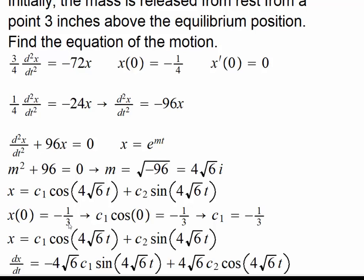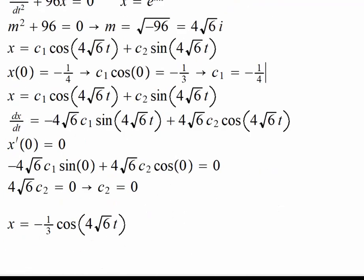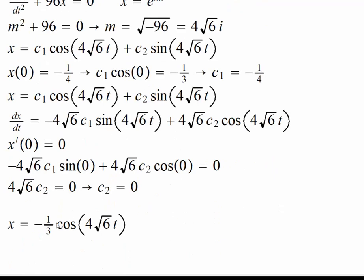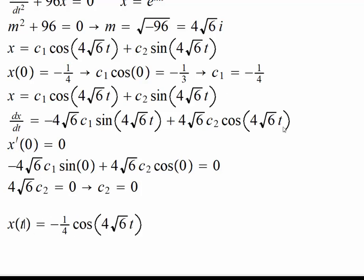Making the correction, the final equation of motion is x as a function of t equals negative one-fourth cosine of 4 times the square root of 6, times t.